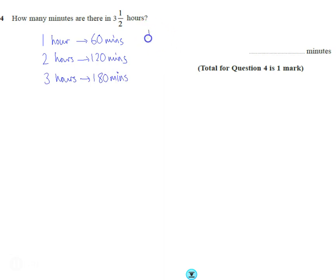Now let's look at half an hour. We know from everyday life that half an hour means 30 minutes. So all we've got to do is add up the 180 and the 30, which gives us 210 minutes.